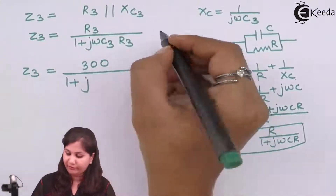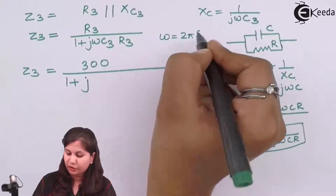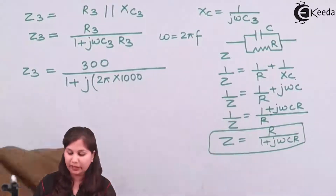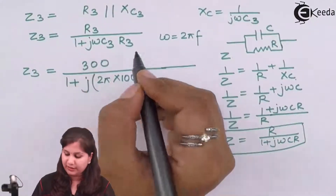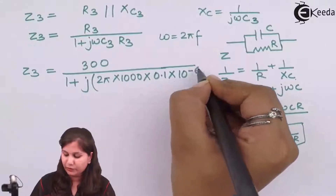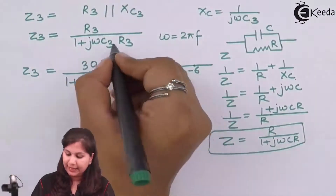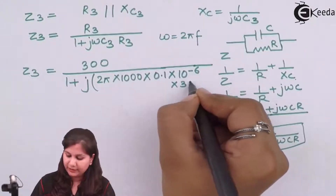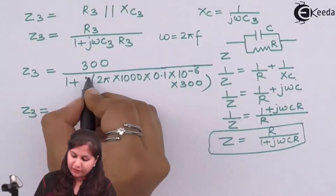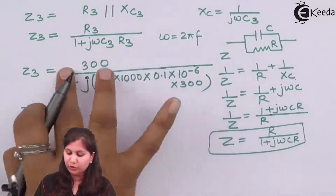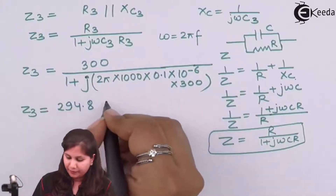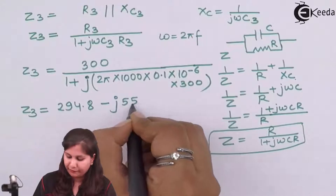Here ω = 2πf. We know f is 1000 Hz. C3 is 0.1 microfarad = 0.1 × 10⁻⁶ F, and R3 is 300 ohms. Solving this complex expression using a calculator, we get Z3 = 294.8 − j55.4.